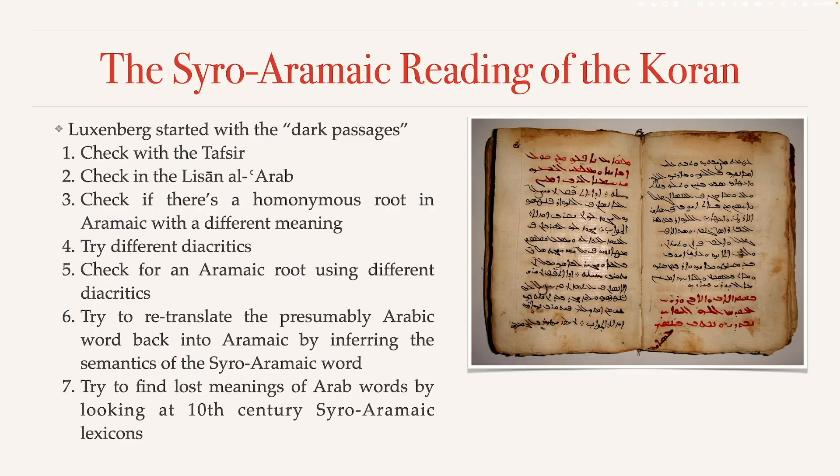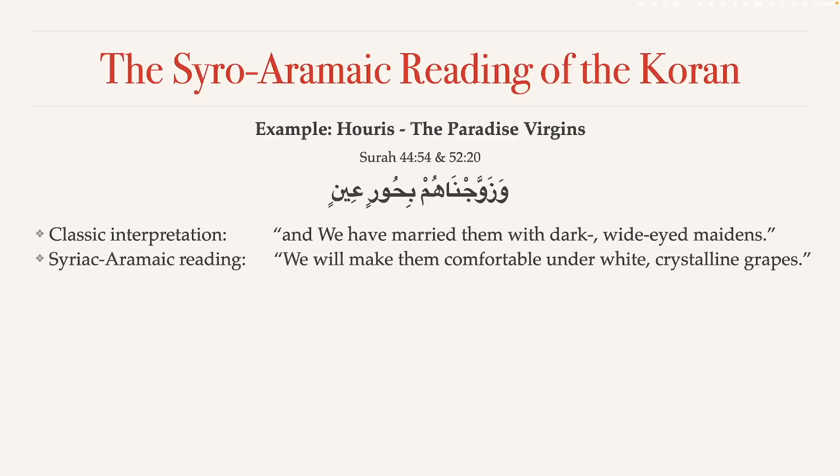Now, this is of course still a bit abstract, so let's go through this by looking at an example. The example is Surah 44:54 and 52:20 — it's the same verse in both instances. Here we are looking at the so-called Huris, the paradise virgins. You can see Luxenberg's methodology at work here.